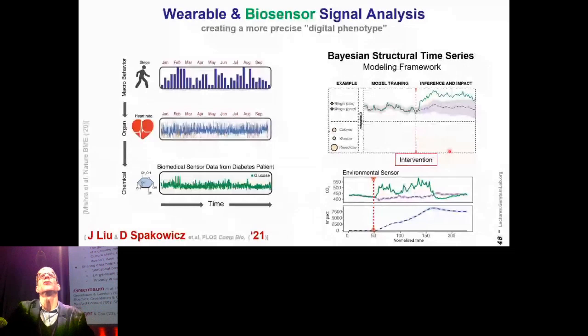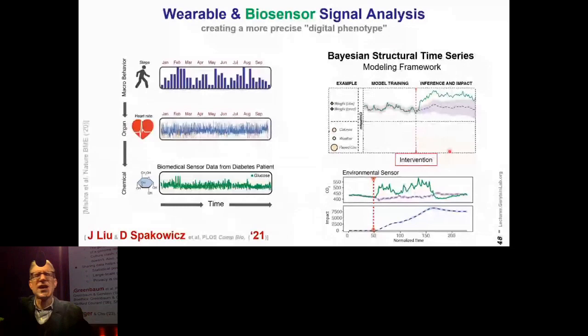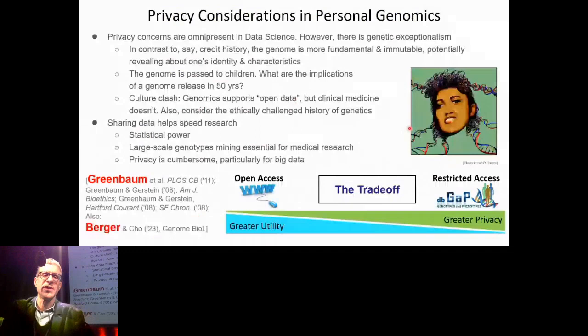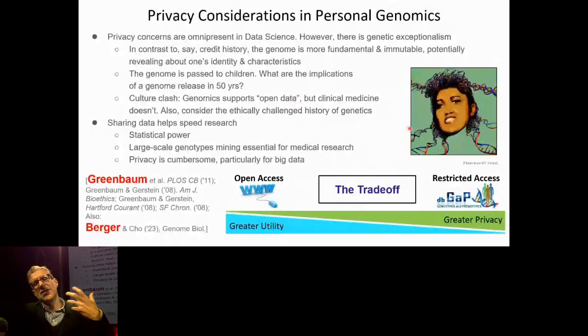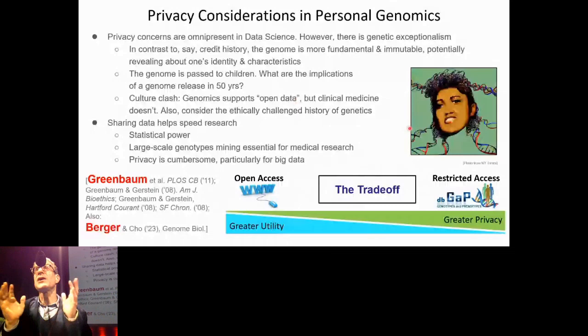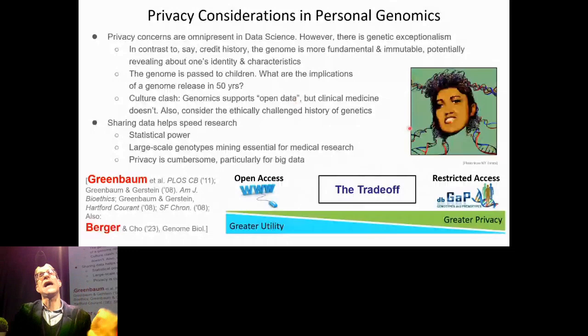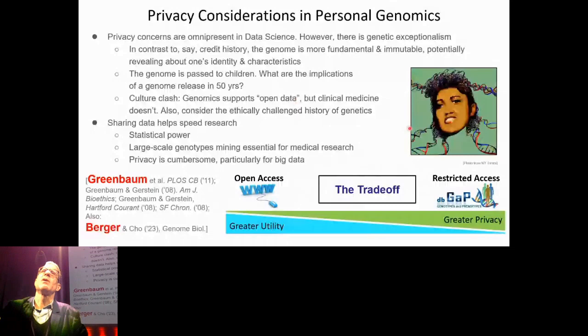Genomics has had a very fraught history with issues of data ownership. Here's a picture from the New York Times of Henrietta Lacks. And that makes us very cautious and not want to share data. But the problem is — and this is the conundrum we all face — we get power from sharing data. I'm talking about measurable statistical power. If you can aggregate a million genomes versus a thousand, you get a lot more power, and that's what really powers medical research. So we have to figure out a way of protecting people's privacy while also allowing large-scale studies.